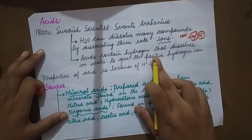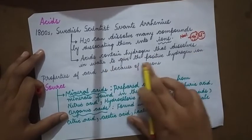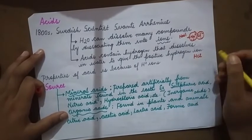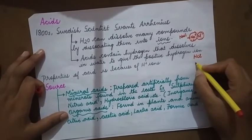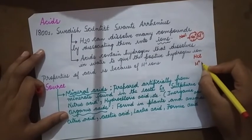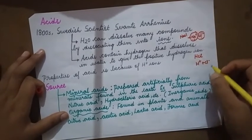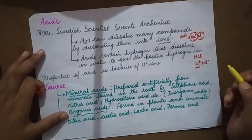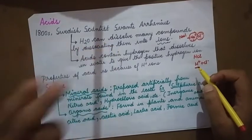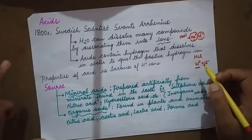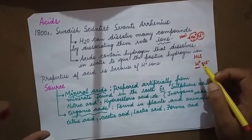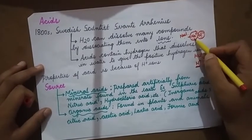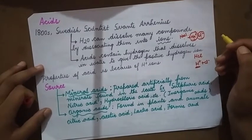Acids contain hydrogen that dissolves in water to give the positive hydrogen ion. For example, HCl breaks down to give H+ and Cl-. HCl is an acid because it gives rise to a hydrogen ion. According to Arrhenius, whenever you dissolve an acid in water, it gives H+. NaCl does not give rise to H+, so it is not an acid.